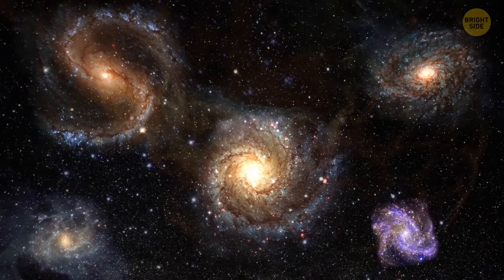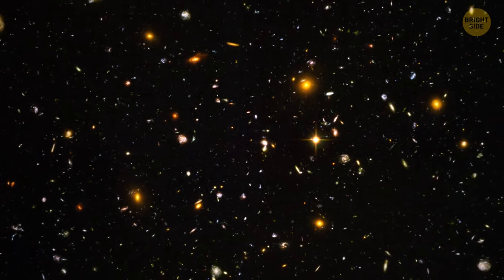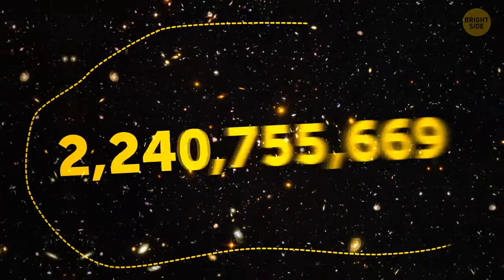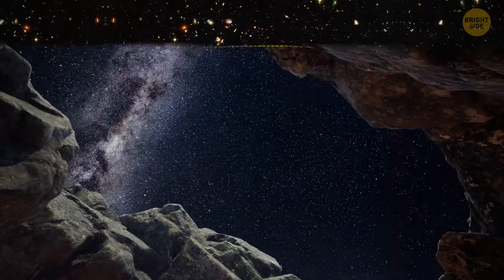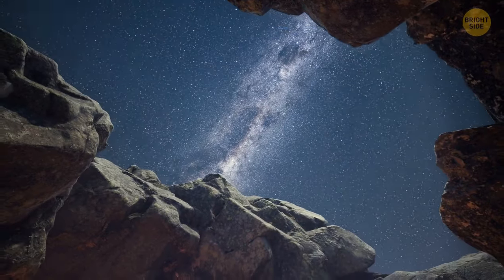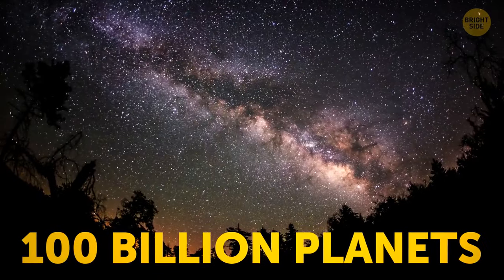Scientists believe that there are at least a couple of billion galaxies out there. We don't know the real number, and probably never will, but they tried to calculate it by counting how many galaxies we can see in a pretty small and restricted area of the sky. It may seem as if the universe was filled with stars and a couple of planets here and there, but our home galaxy has at least 100 billion planets.